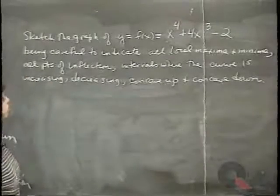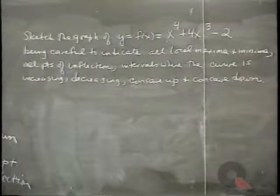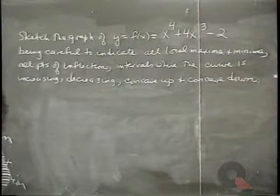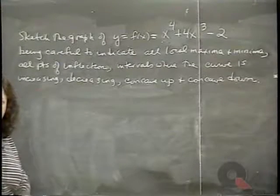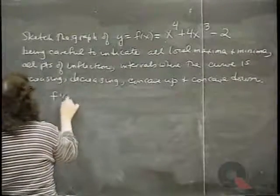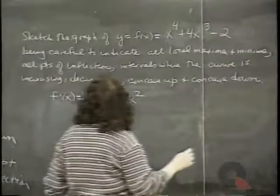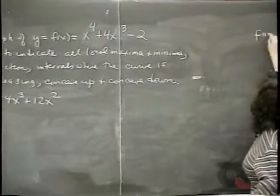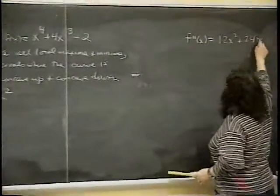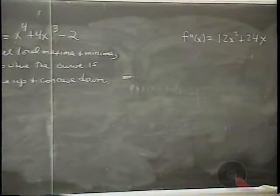For our next example, sketch the graph of f of x equals x to the 4th plus 4x cubed minus 2, indicating all local maxima and minima, all points of inflection, and intervals where the curve is increasing, decreasing, concave up, and concave down.